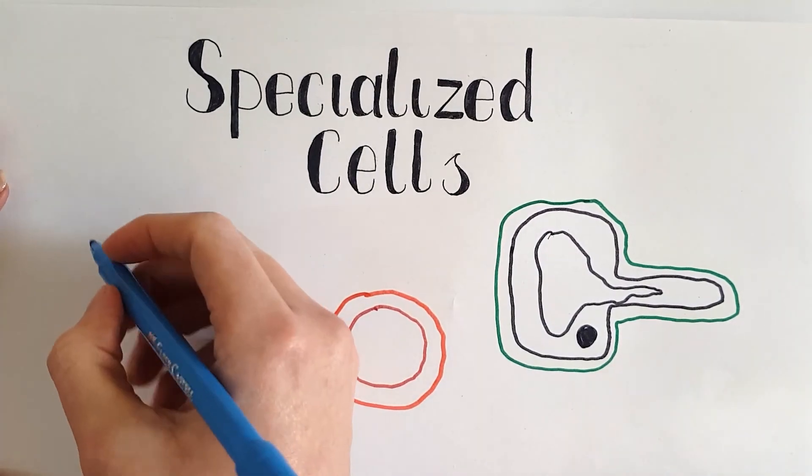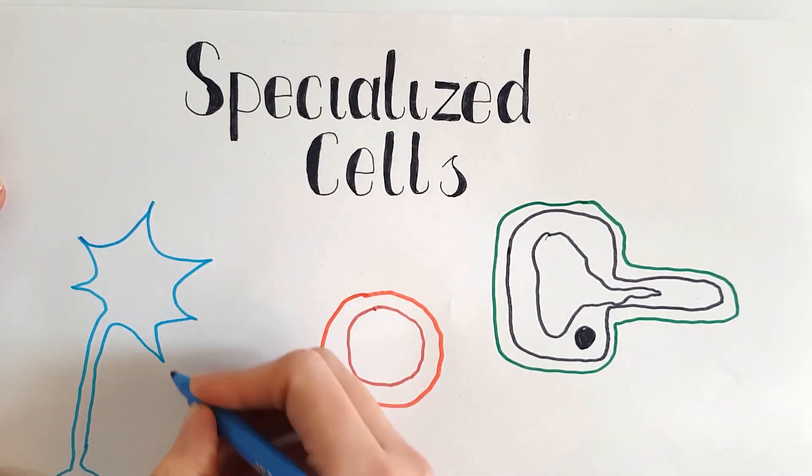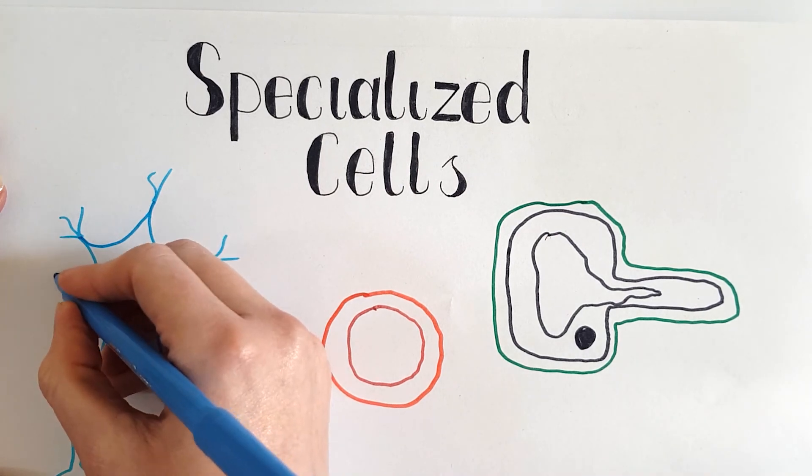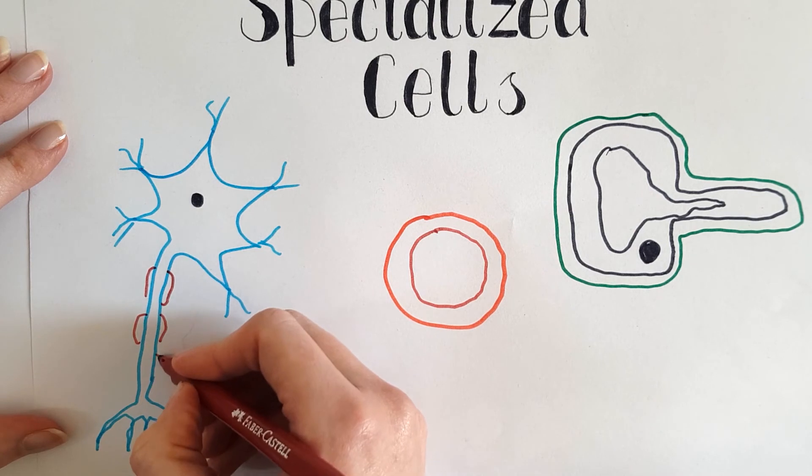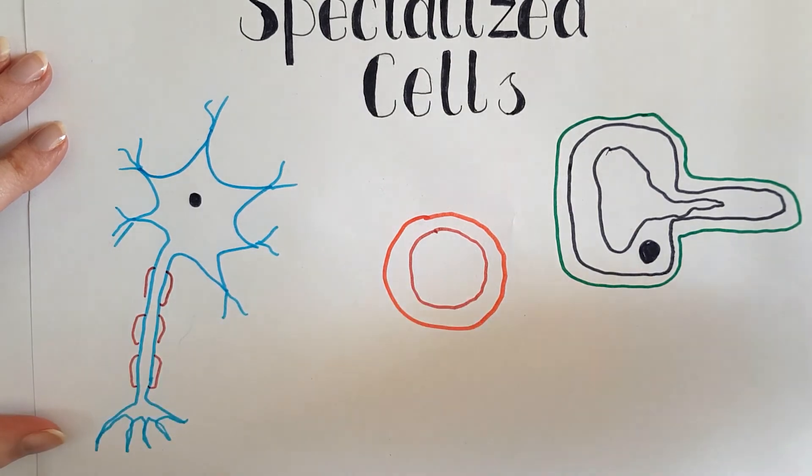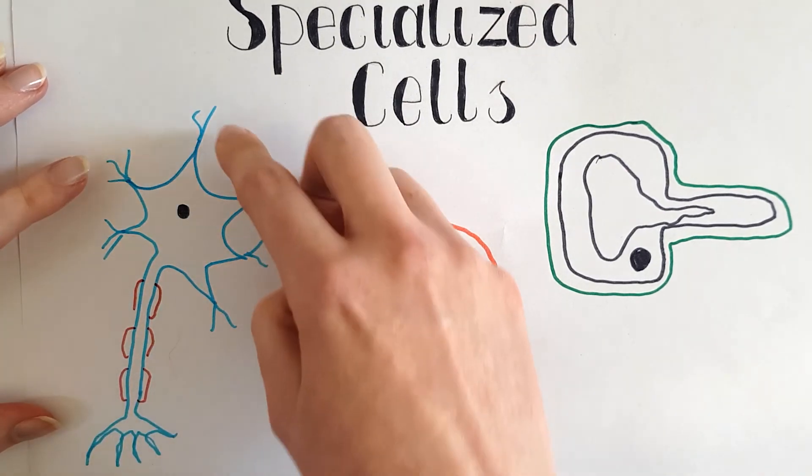One other specialised weird looking cell is a nerve cell. Nerve cells are all throughout your nervous system. They are responsible for transmitting signals from your sense organs to the rest of your body.